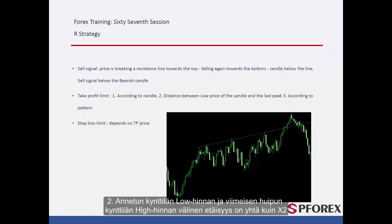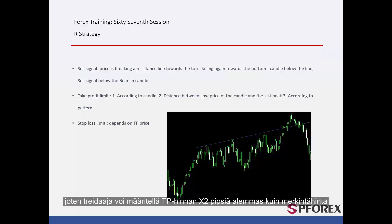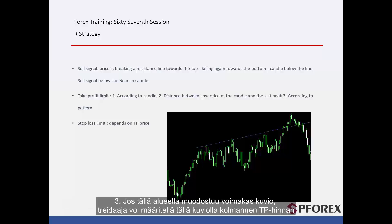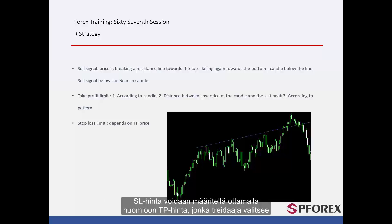The second TP price (X2) equals the distance between the low price of the given candle and the high price of the candle on the last peak. Thus, a trader can consider TP2 as X2 pips lower than the entry price. If a powerful pattern forms in this region, a trader can consider a third TP price via that pattern. SL price can be determined based on the TP price that the trader selects.